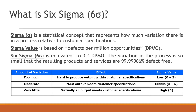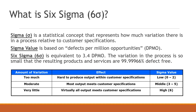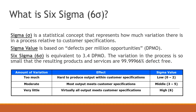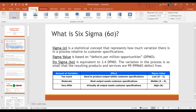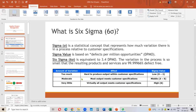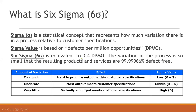Six Sigma is a quality management methodology used to help businesses improve current processes, products, or services by discovering and eliminating defects. The goal is to streamline quality control in manufacturing or business processes so there is little to no variance. When there is too much variation, it is hard to produce output within customer specification and the sigma value is low, around zero to two.